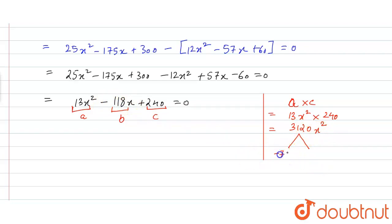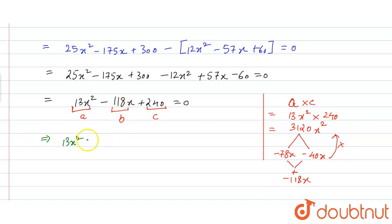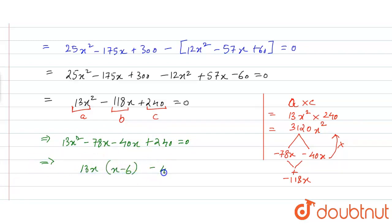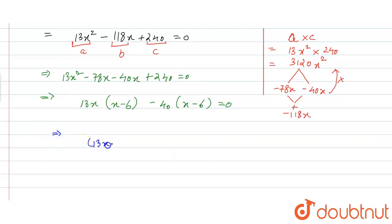The terms are minus 78x and minus 40x, since their product is 3120 and their sum is minus 118x. Splitting the middle term: 13x squared minus 78x minus 40x plus 240 equals 0. Taking 13x common gives 13x(x minus 6), and taking minus 40 common gives minus 40(x minus 6) equals 0. Simplifying: (13x minus 40)(x minus 6) equals 0. Therefore x equals 40 by 13 or x equals 6.